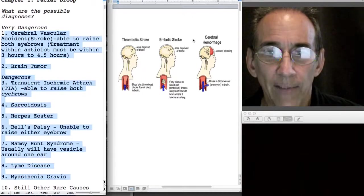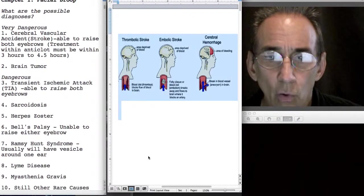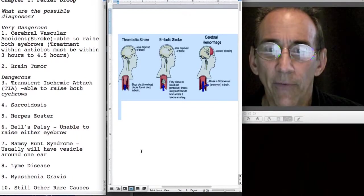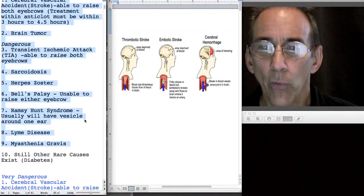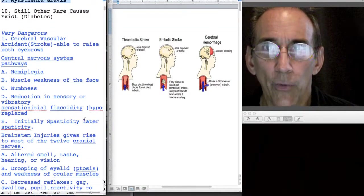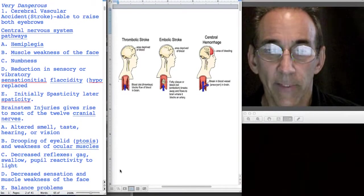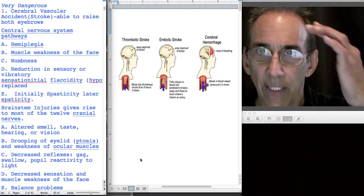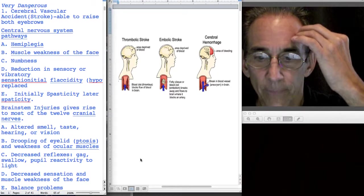A cerebrovascular accident or stroke can have many of the same symptoms, but there's one thing that Bell's palsy will have that a stroke usually won't have or rarely has, and that would be the inability to move the forehead muscles.